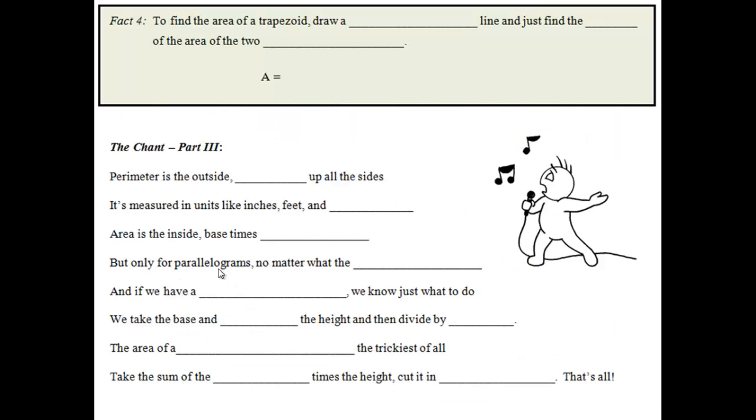Let's go to that next page, where we have our final fact. It says, to find the area of a trapezoid, draw a blank line, and just find the blank of the area of the two blanks. All right, I'll give you like 15 seconds to fill in as many of those blanks as you can. I think you can get two out of three, maybe all of them. Go ahead and try it. All right, let's see, did you get the first blank? That would be a diagonal line. And then find the sum of the area of the two triangles that you made. And that formula looks like this. One half, parentheses, base one plus base two, times the height. Most important thing, though, first step, take the sum of the bases.